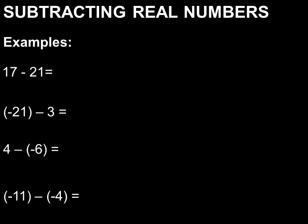Let's take these examples. 17 minus 21 also translates to 17 plus negative 21, therefore the answer will be negative 4. Next will be negative 21 minus 3, which also translates to negative 21 plus negative 3, therefore the answer will be negative 24.